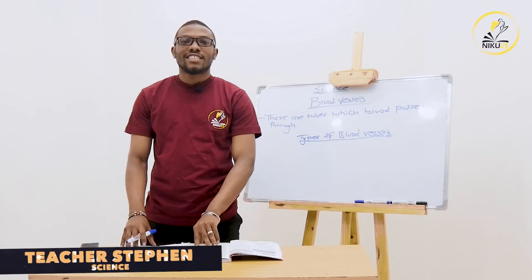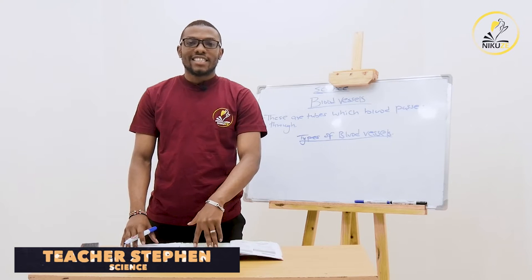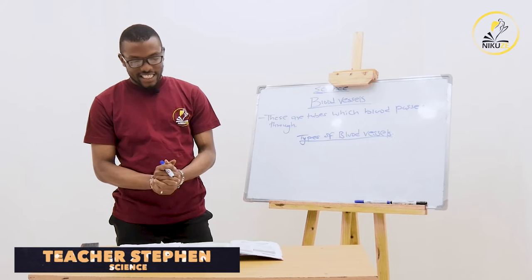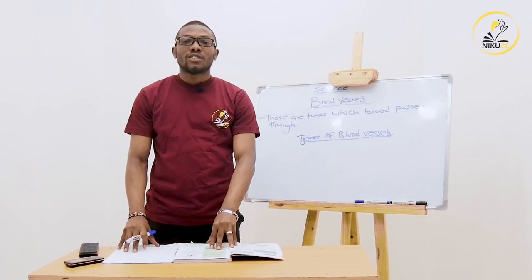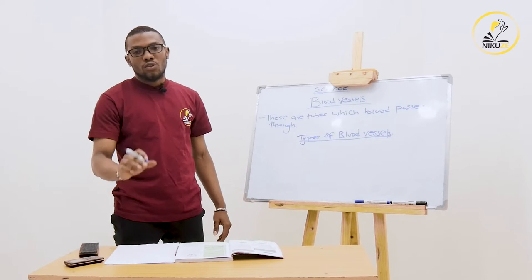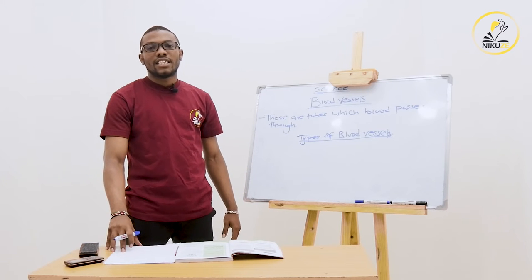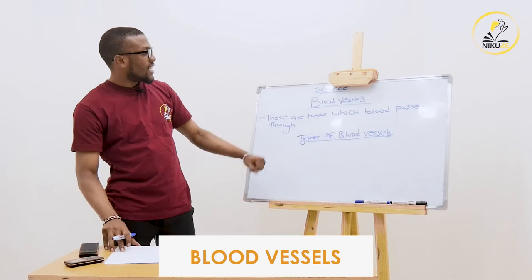Hello, welcome to today's class. My name is Teacher Steve and we are looking at Science - the human body. Remember in our last class we looked at the parts of the circulatory system: the heart, the blood, and the blood vessels. We looked at the components of the blood which were the red blood cells, the white blood cells, the platelets, and the plasma.